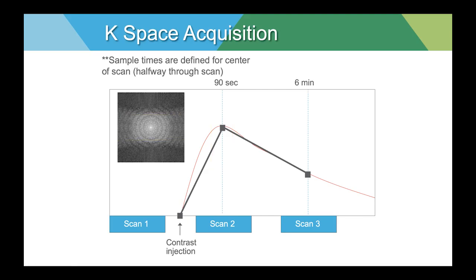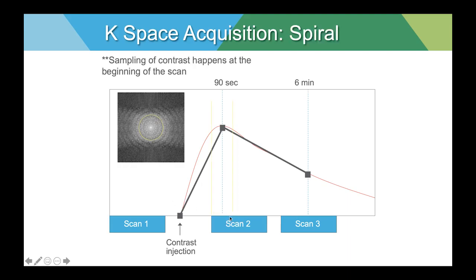We might do it a different way. If k-space is acquired from the center spiraling outwards, then the contrast information is acquired in the first minute. In that case, we want to shift the start of the scan so that the first minute lines up with the peak enhancement — and therefore there is a longer delay. Either way is perfectly acceptable. All that matters is that we know how our system acquires k-space so that we can adjust the start time of the scan appropriately.